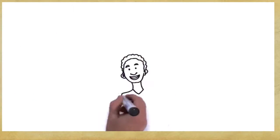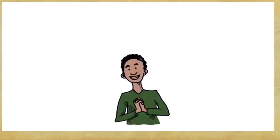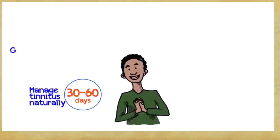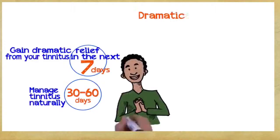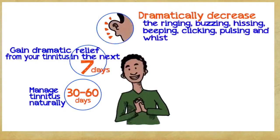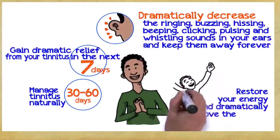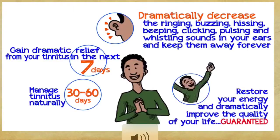So what can you gain if you embrace these three easy principles? You can manage tinnitus naturally within 30 to 60 days. Gain dramatic relief from your tinnitus within the next seven days. Dramatically decrease the ringing, buzzing, hissing, beeping, clicking, pulsing, and whistling sounds in your ears and keep them away forever. Restore your energy and dramatically improve the quality of your life, guaranteed.